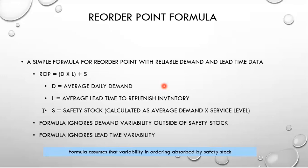If lead time variability is high, some people add it into the lead time calculation based upon the customer service level. For instance, if you have a customer service level of 95%, whatever the Z-score is, you multiply the standard deviation of your lead time by that Z-score. To clarify: if you want to calculate lead time variation as part of this calculation, you take your Z-score — used for your customer service level — and multiply it by the standard deviation of your lead time.